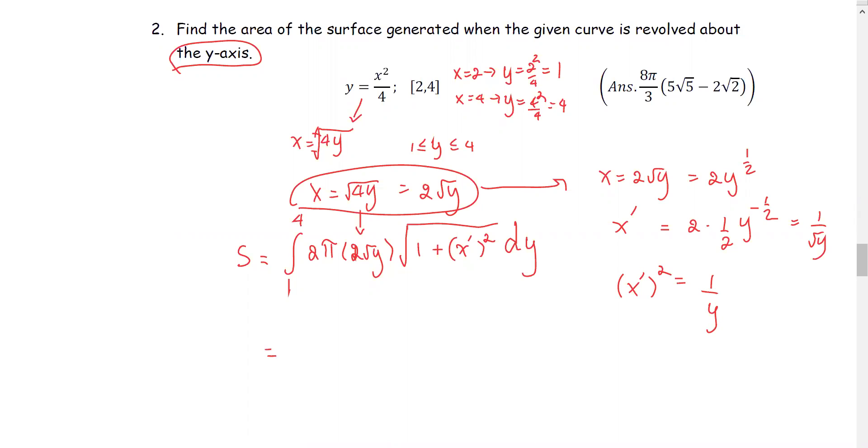Now go back to the problem. 2 times square root y here is the function height, which is the radius of the band. So 2 times 2 gives us 4, 4pi outside the integral. We have integral from 1 to 4 of square root y multiplied by square root of 1 plus 1 over y, with respect to y.